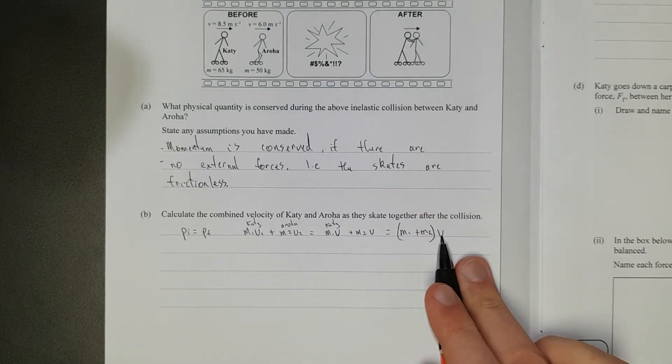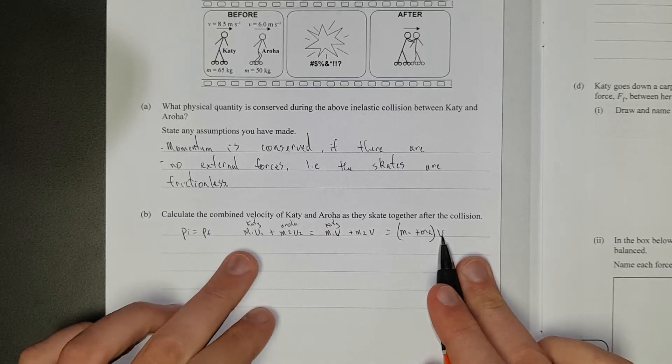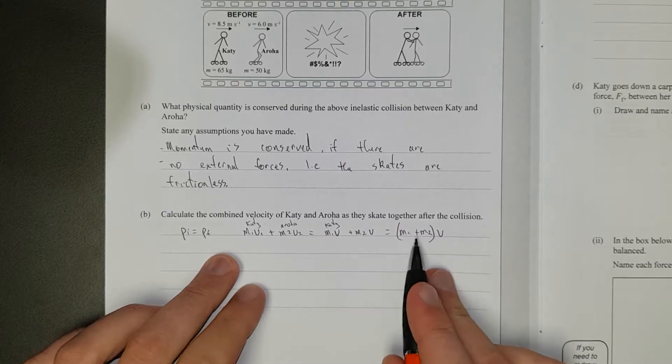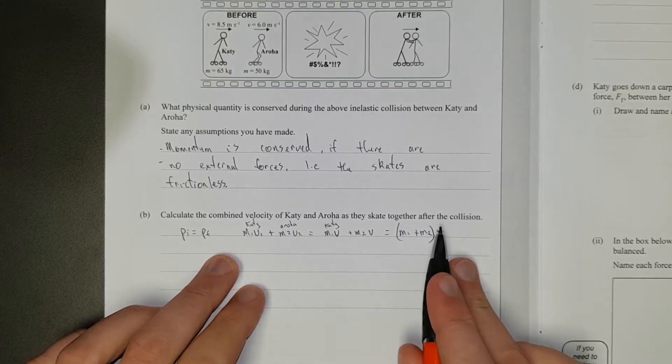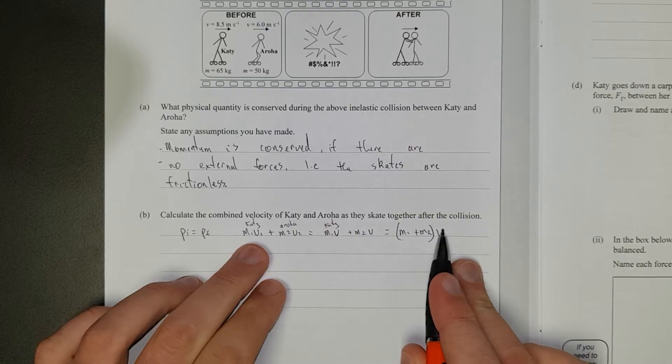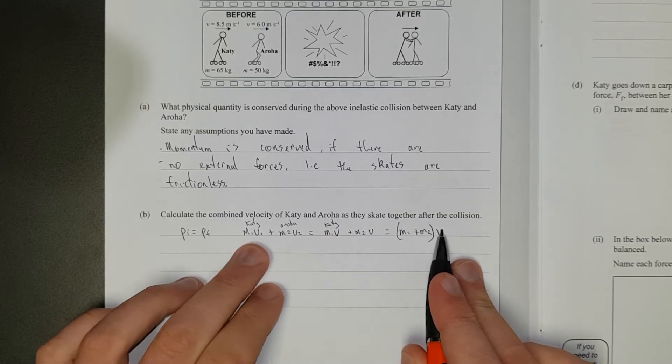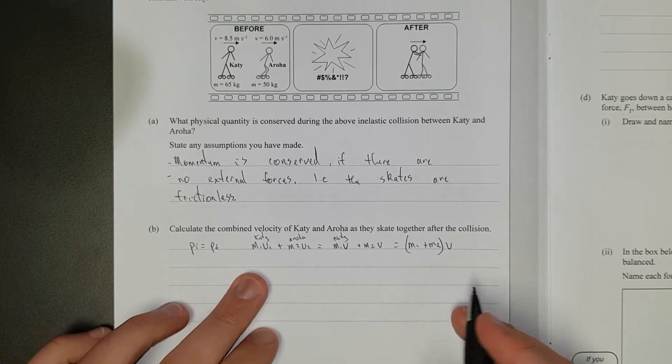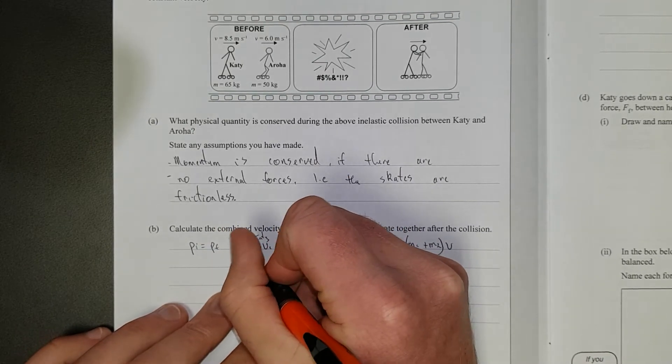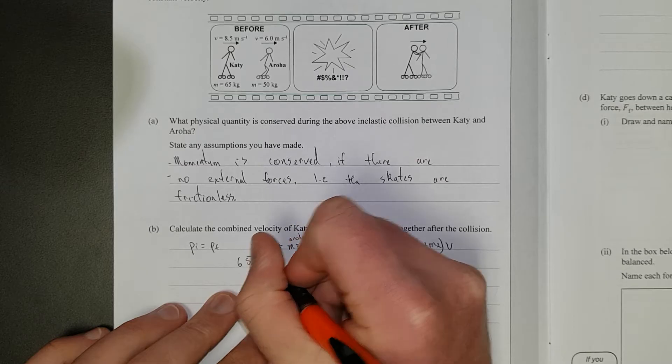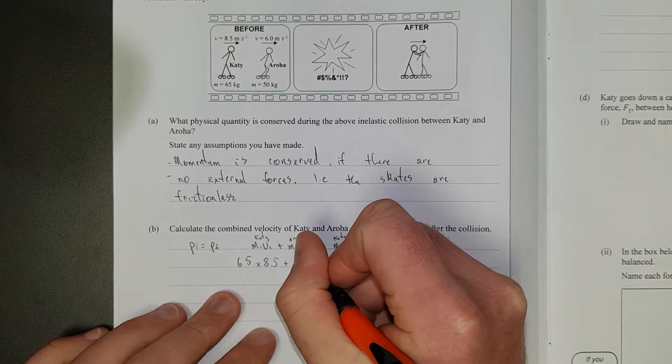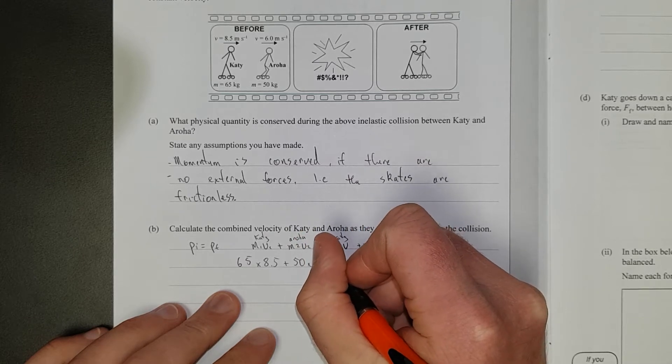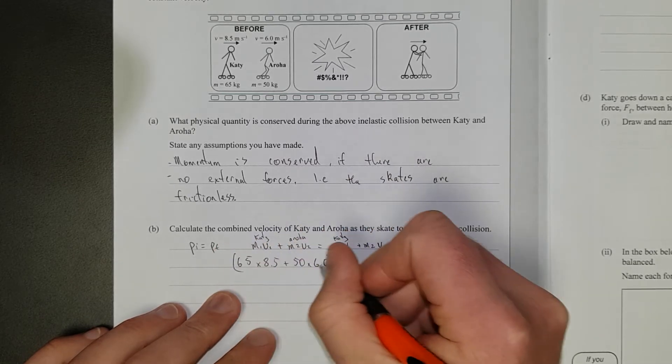Right, and what we're trying to find is v is the velocity after the collision. That's what we're trying to find. So what we'll do is m1 v1 divided by the stuff in the brackets here will give me the velocity. So we'll make these numbers first, and then we'll divide by the total mass. So we're going to have the mass of Katie, so it's going to be 65, times how fast she's going. 8.5 plus 50 mass times 6.0.